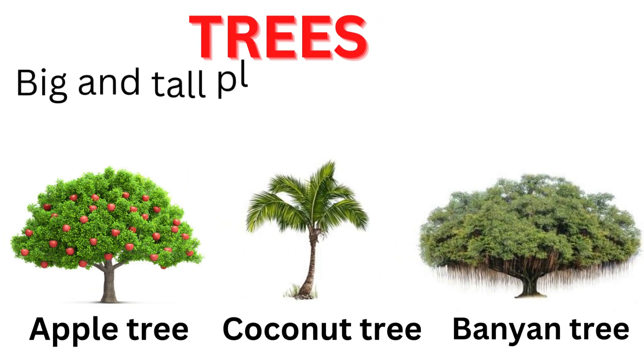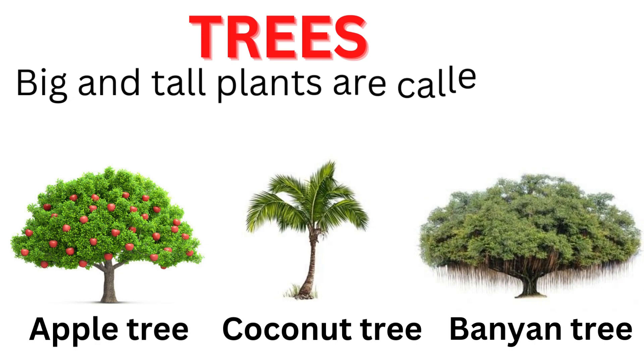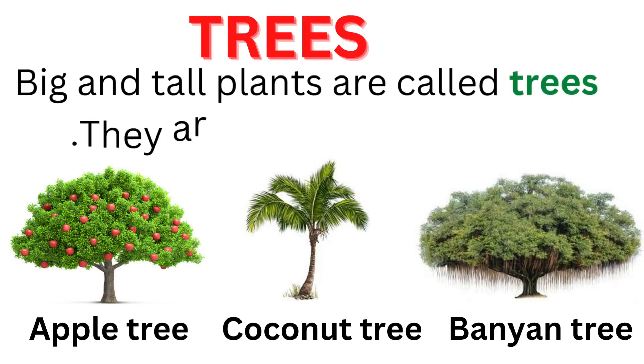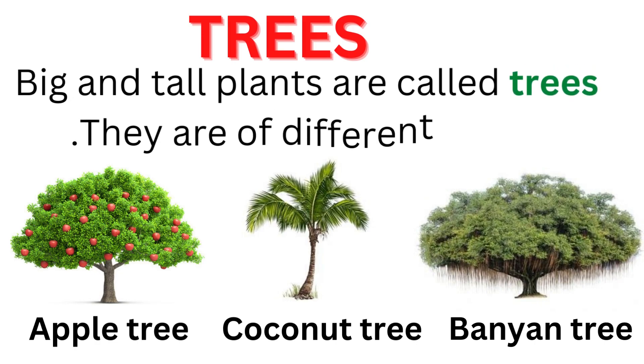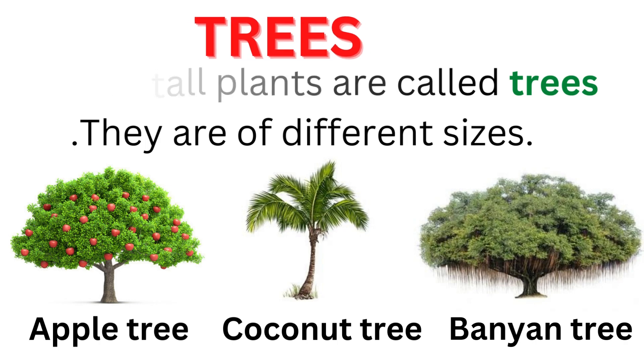Trees. Big and tall plants are called trees. They are of different sizes. Examples include apple tree, coconut tree, and Indian tree.